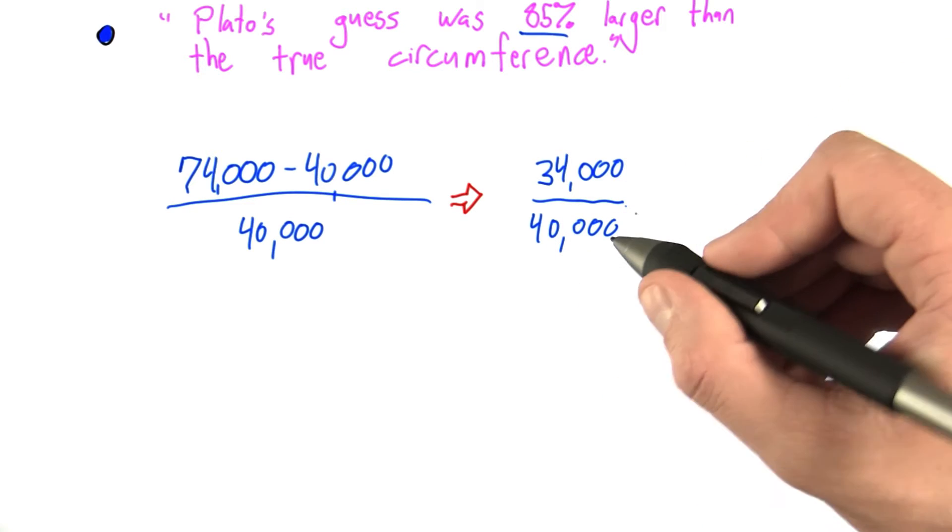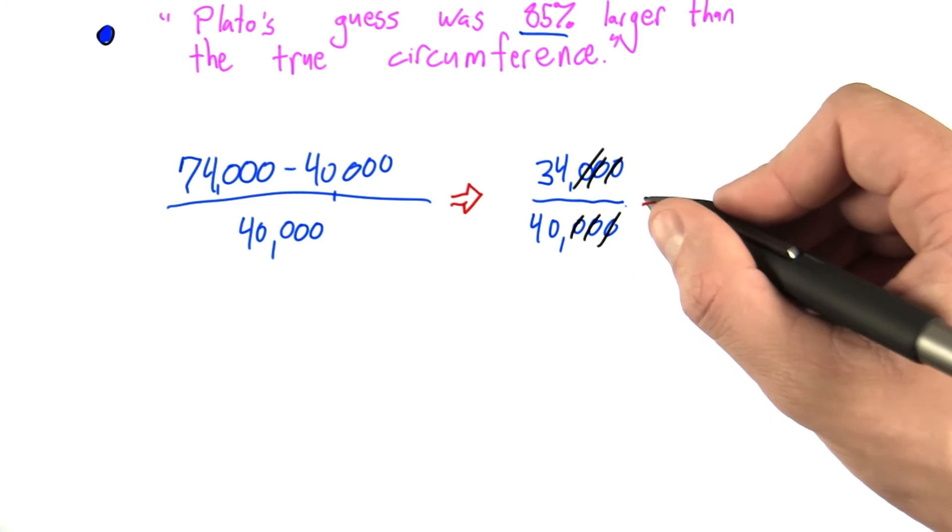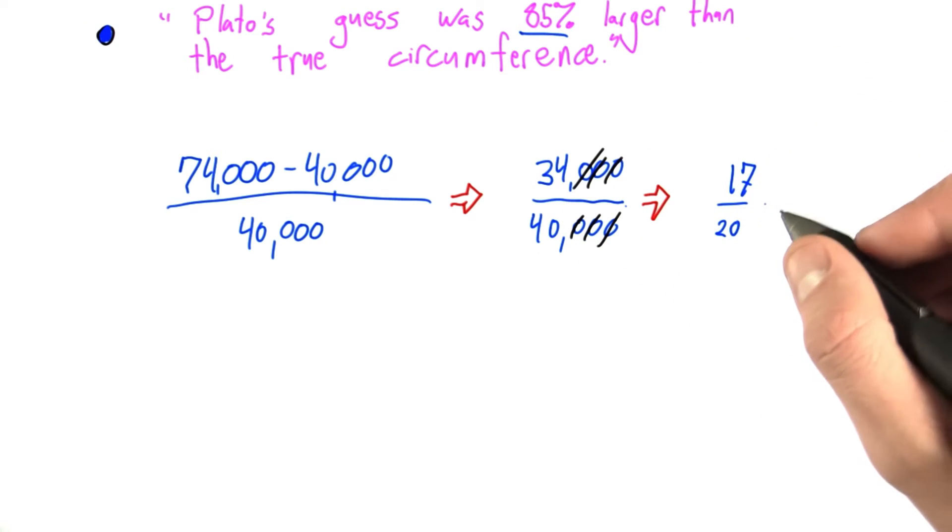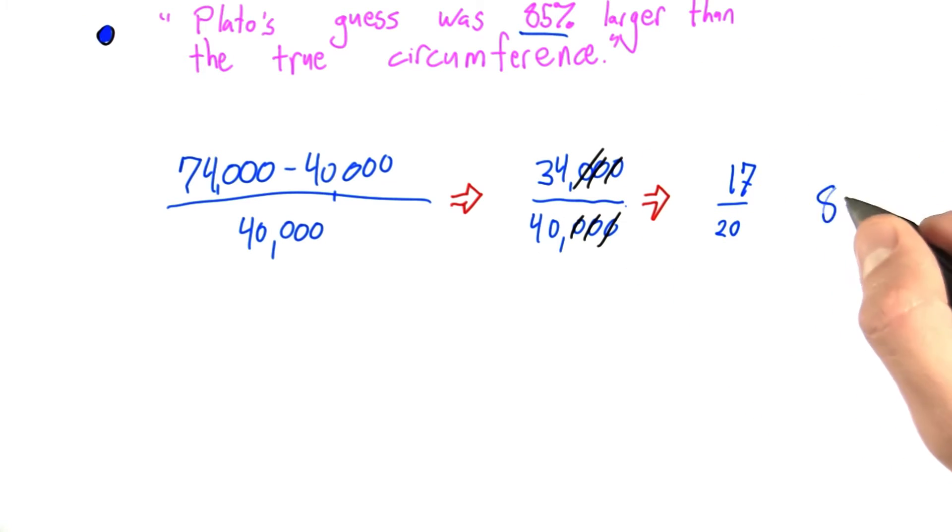And we can see, we can do some canceling. We're left with 34 over 40, reduces to 17 over 20, or 85%.